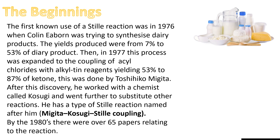This was done by a chemist called Migata. After this discovery, he worked with a chemist called Kosugi and went on to further substitute other reactions. He has a type of Stille reaction named after him called the Migata-Kosugi-Stille coupling, and by the 1980s there were over 65 papers on this type of reaction.